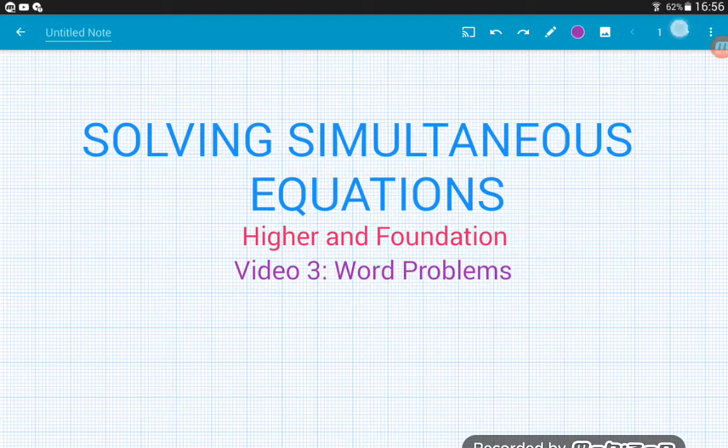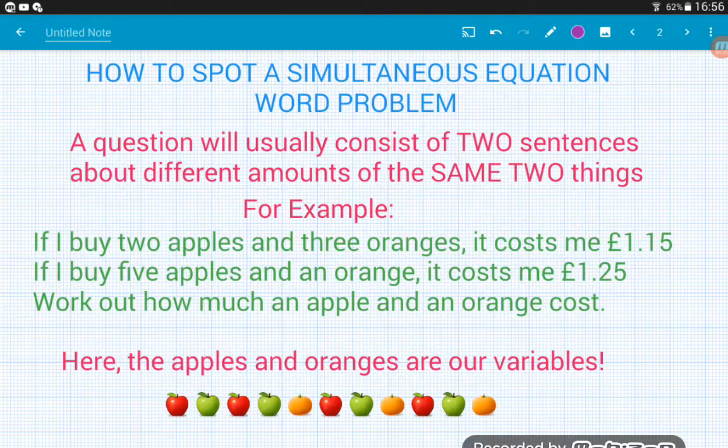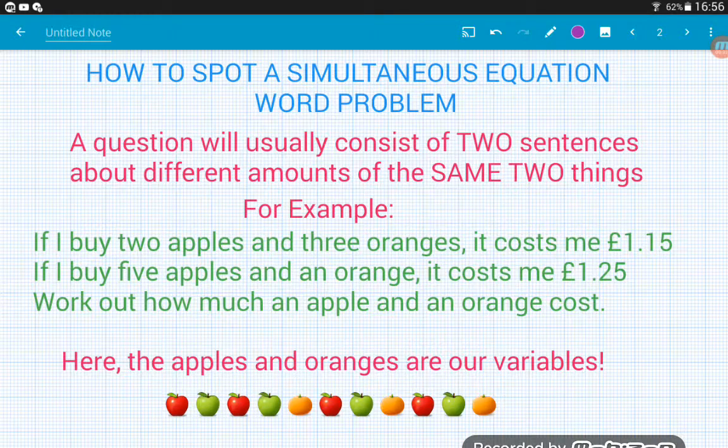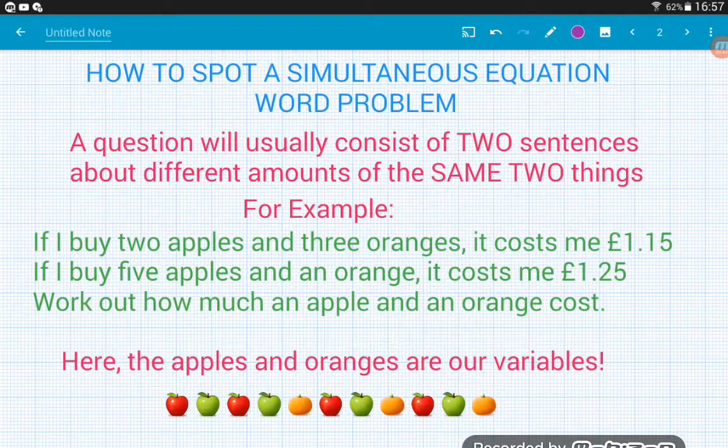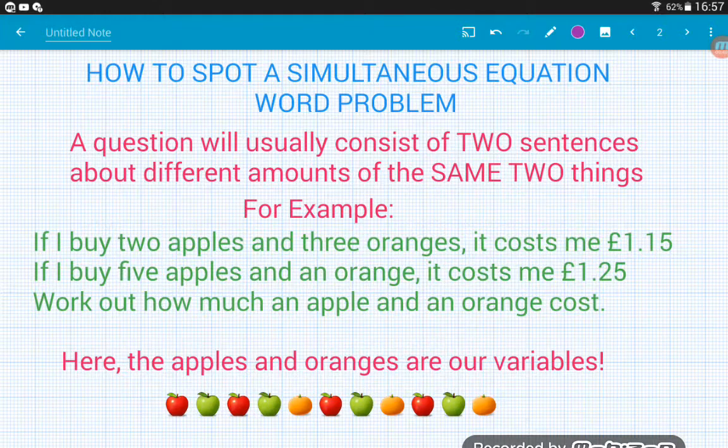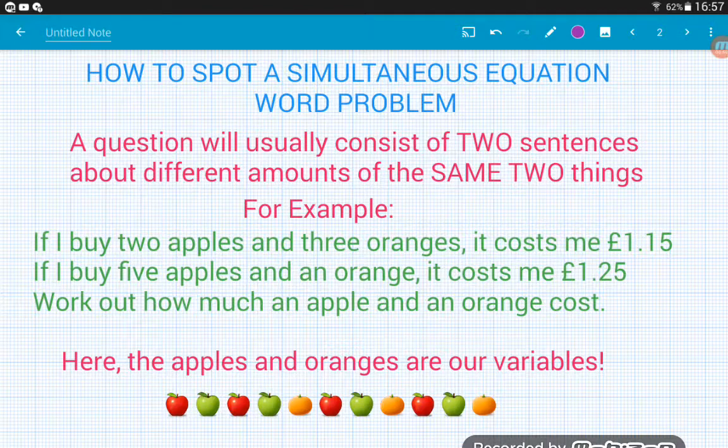In this one we're going to be looking at how to solve simultaneous equation word problems and how to spot them. You are usually given either two sentences about the same two things, variables, or maybe one sentence that tells you two things about the same two variables. For example, this question here: if I buy two apples and three oranges, it costs me £1.15. If I buy five apples and an orange, it costs me £1.25. So here my variables are the apples and oranges. We're told how much it costs for different amounts of the two, and we're asked to work out the price of an apple and an orange.